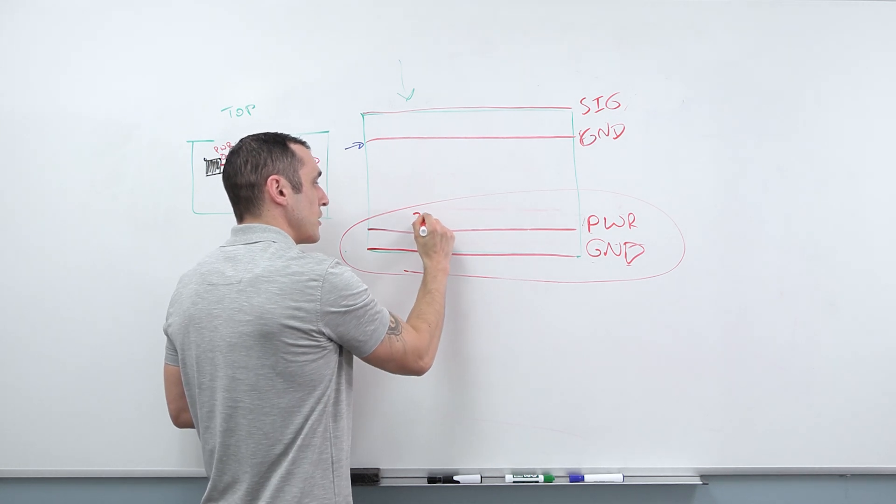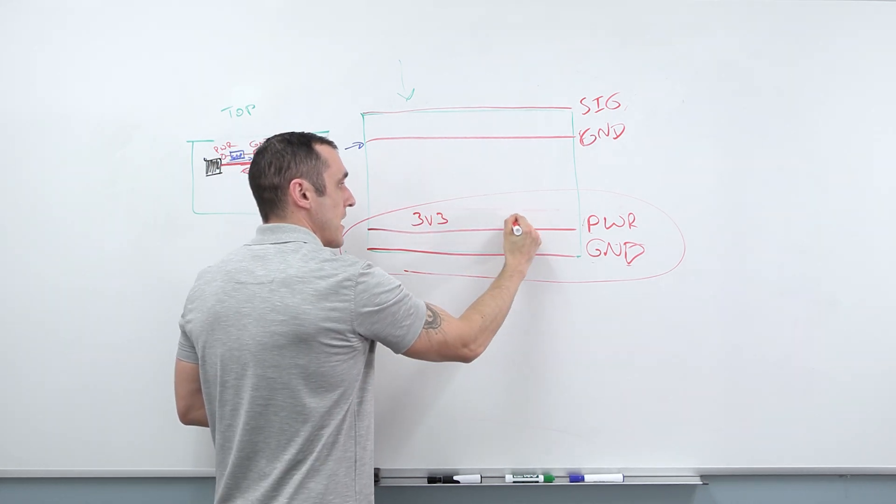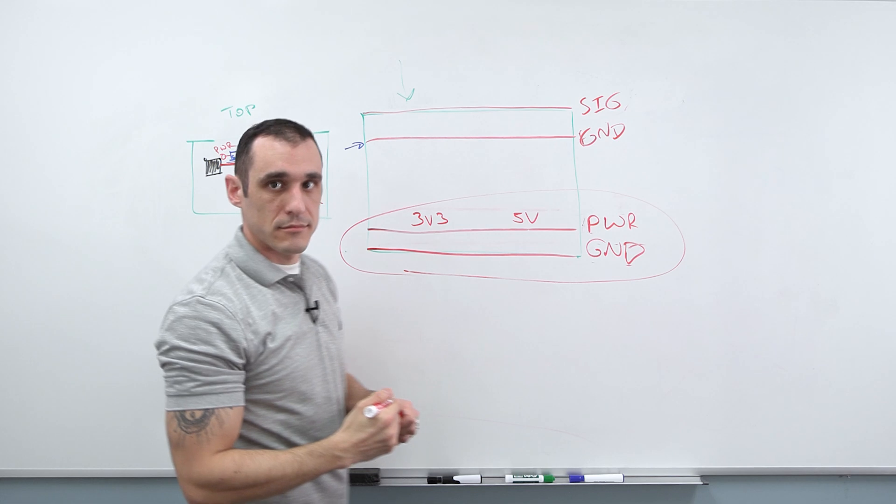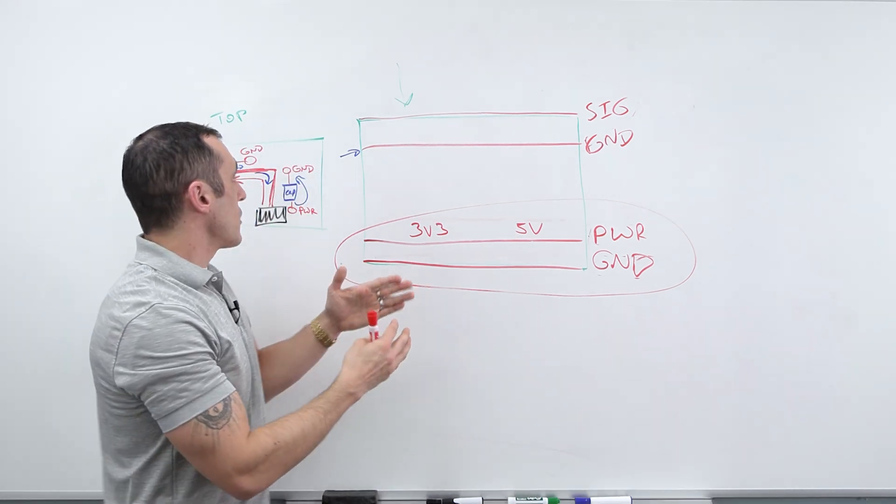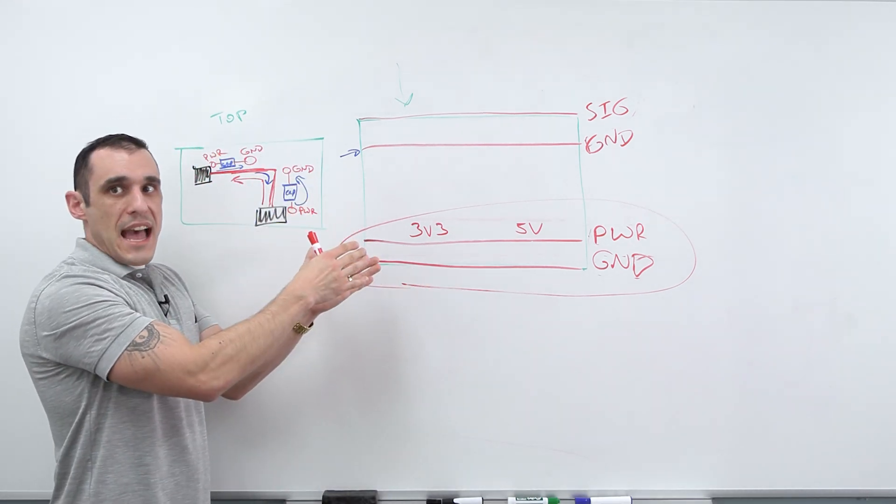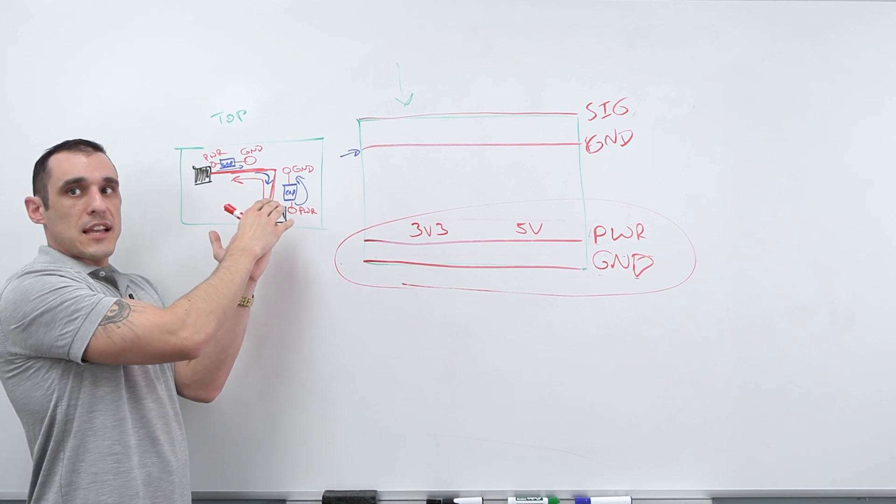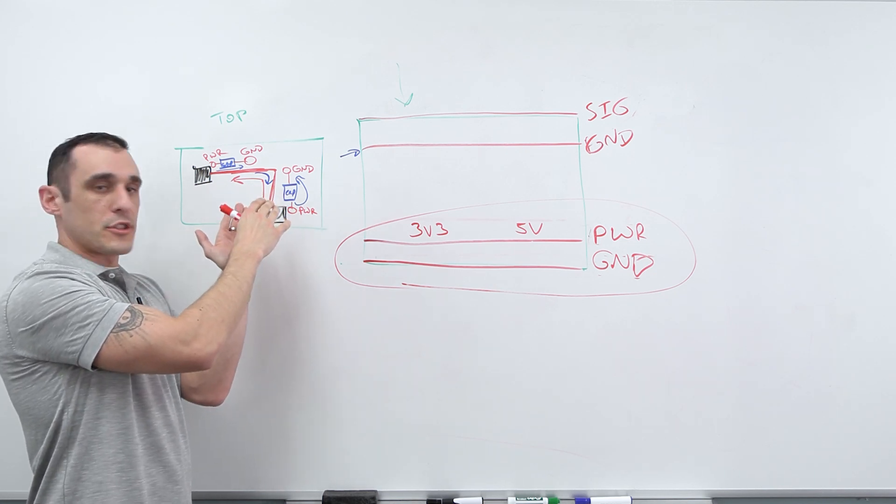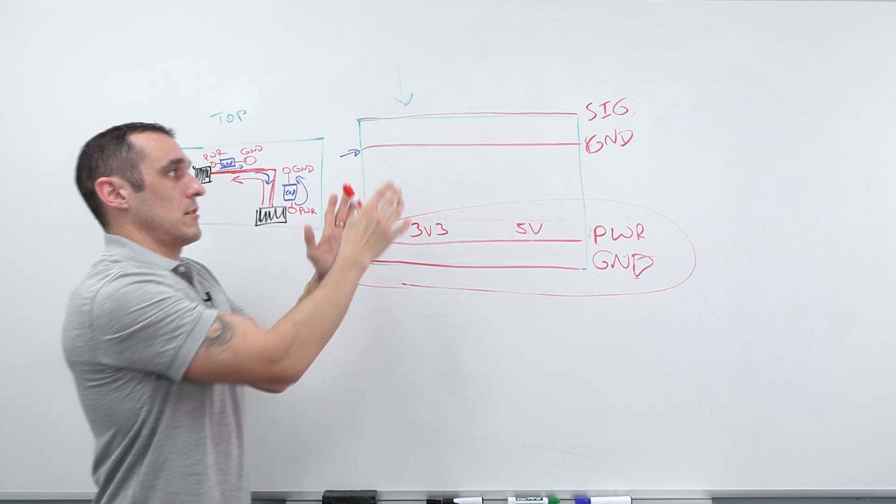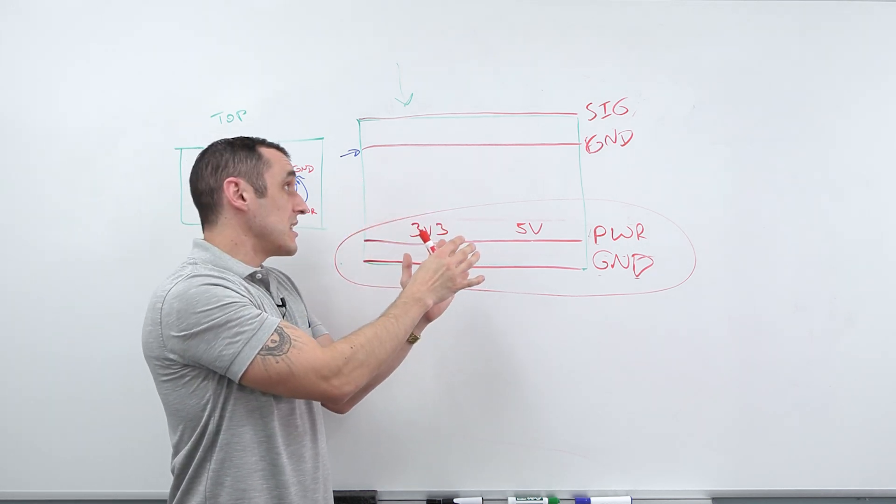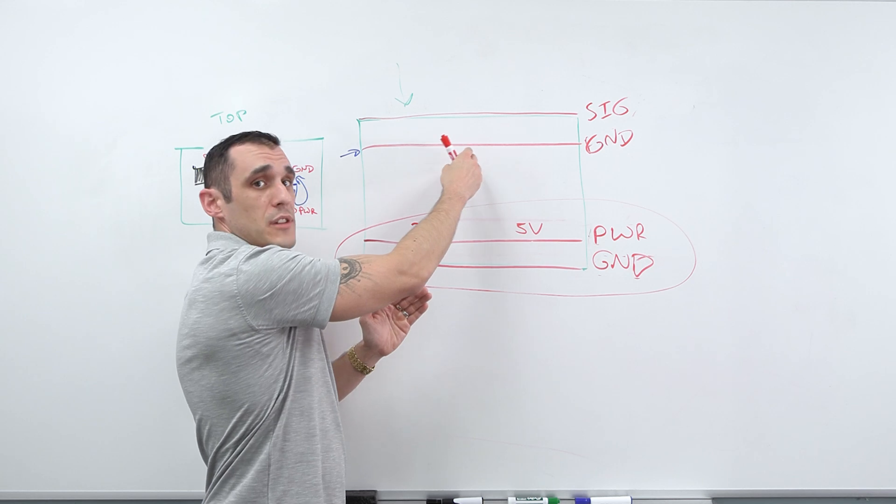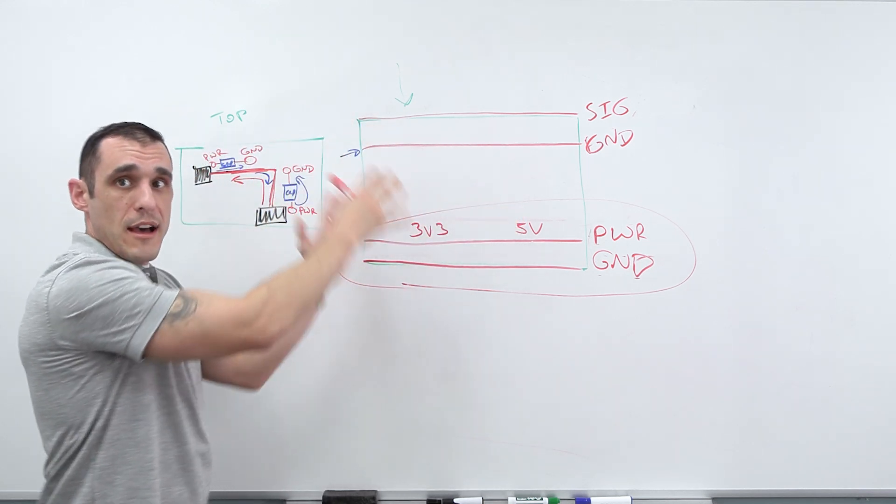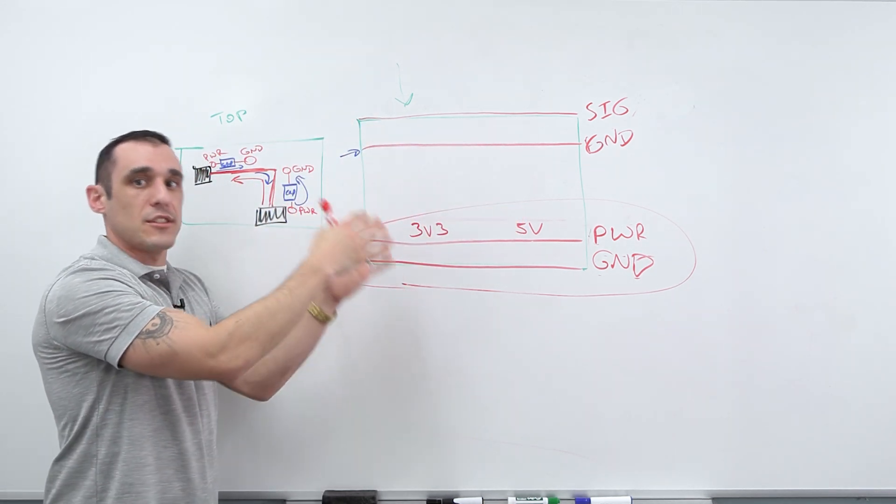So maybe you would have a 3.3V and then a 5 volt. That's also common. Just think about how you can rearrange the stack up if you don't want to go through this exercise of worrying about where your capacitors are placed to provide a return path. Instead, try and rearrange the stack up if needed. So that way you can get direct coupling to ground. And then you don't have to worry about how does the current get from power plane into ground plane.